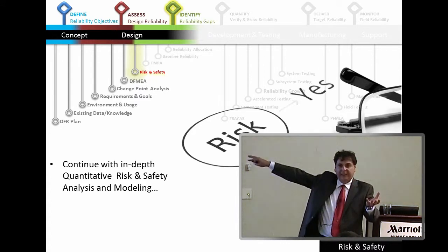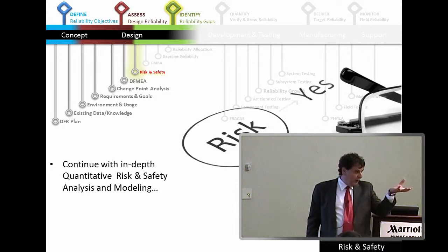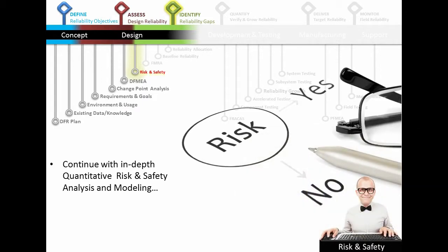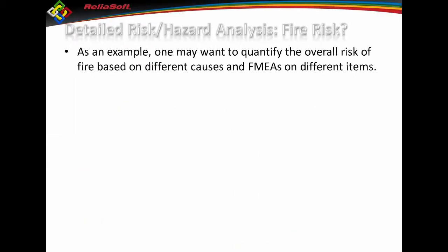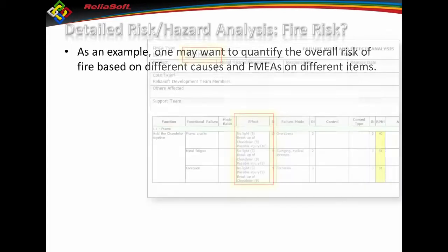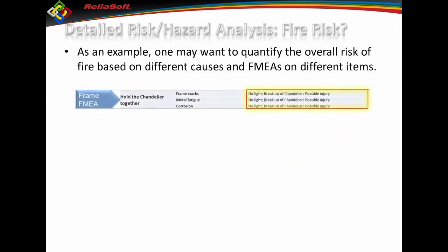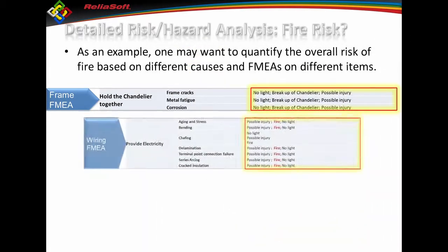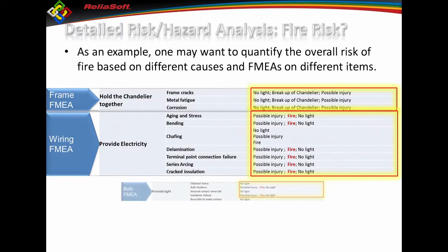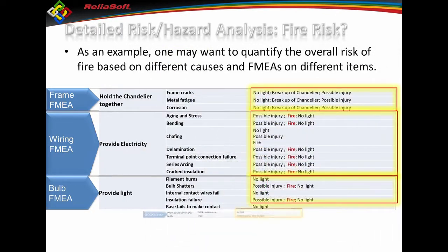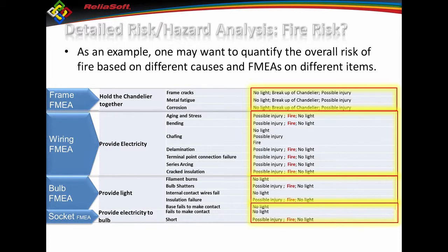Even though I put in those RPNs, I want to do a more in-depth risk and safety analysis. Now if I take the information that's already in the FMEA, what can I do with it? I had four FMEAs, and each one is not a standalone item — I want to merge them all together. From a whole system perspective, I've got an FMEA for the frame, one for the wiring, one for the bulb, and one for the socket. Looking at the effects of each failure mode, I may find effects that a safety analyst would consider undesirable.